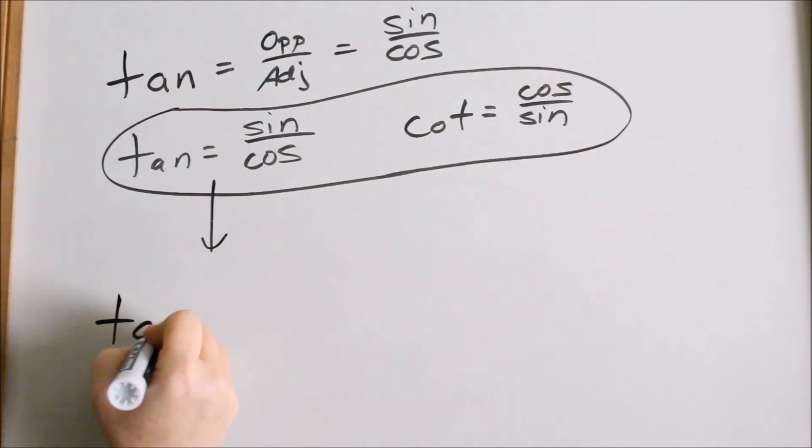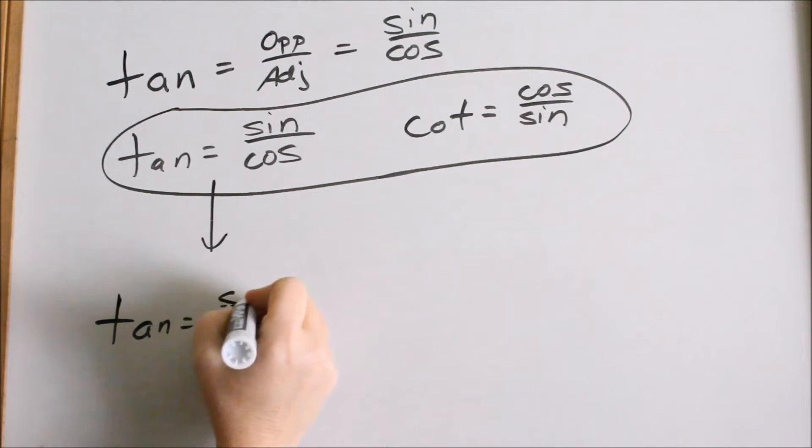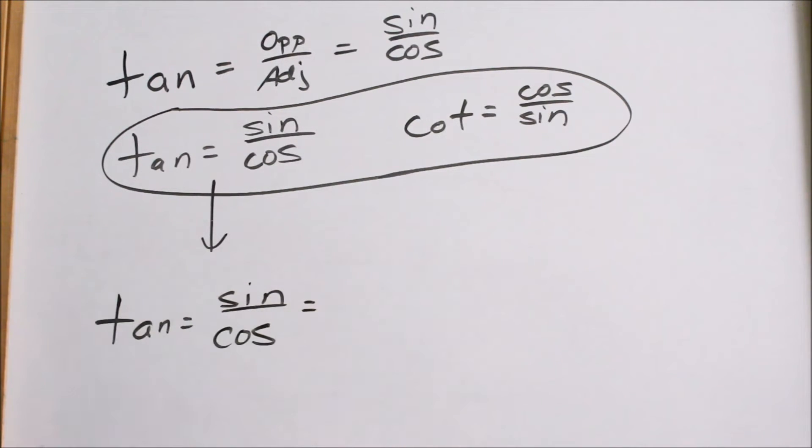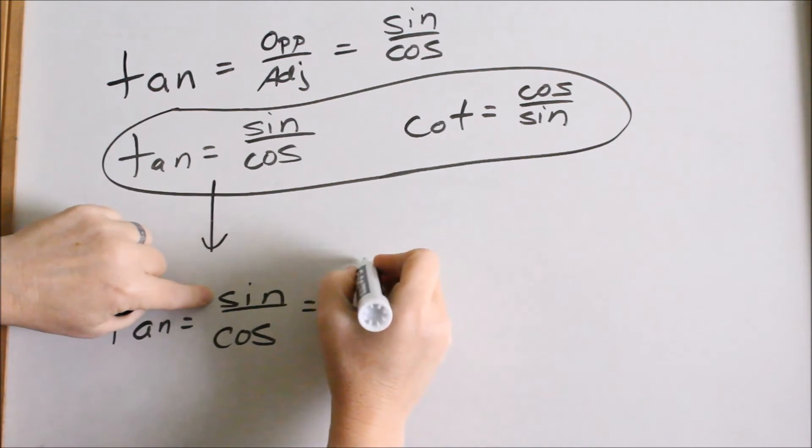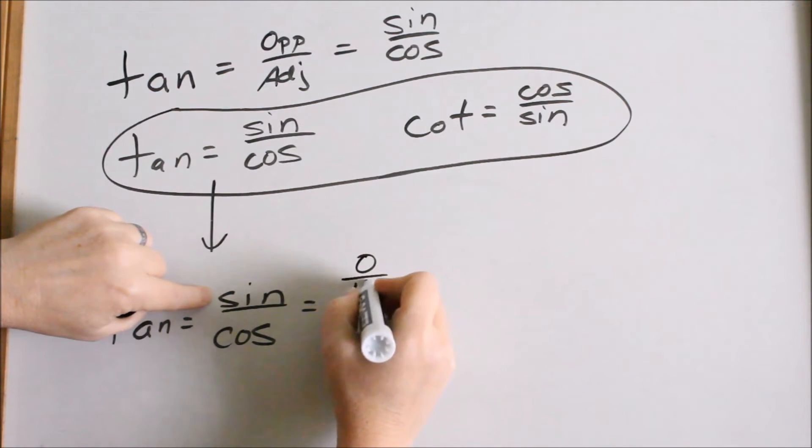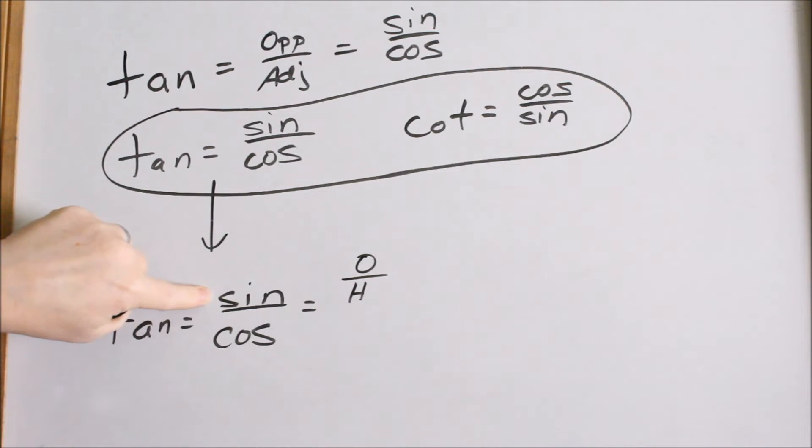So we're just going to start with tangent equals sine over cosine. But what is sine? If I asked you sine is what over what? By definition, sine is opposite over hypotenuse. True? Yes.